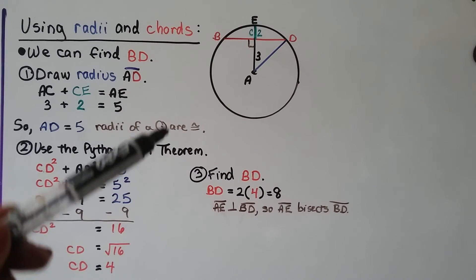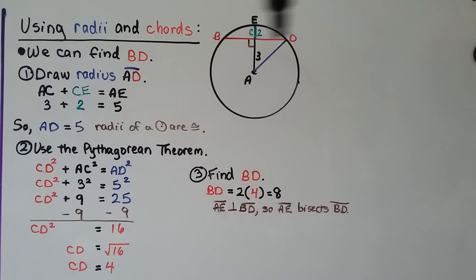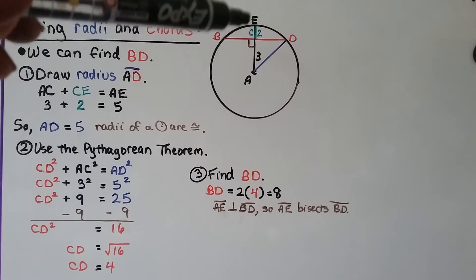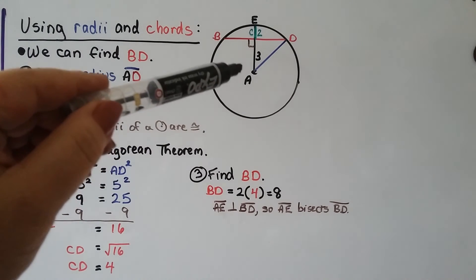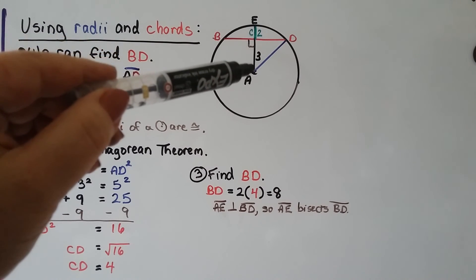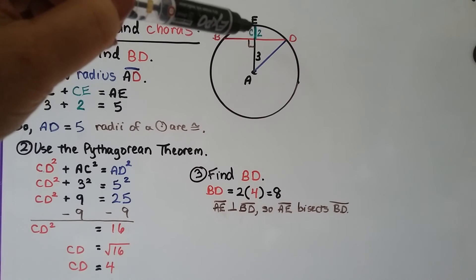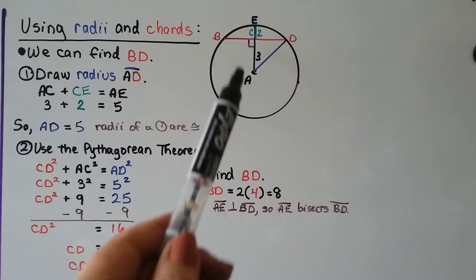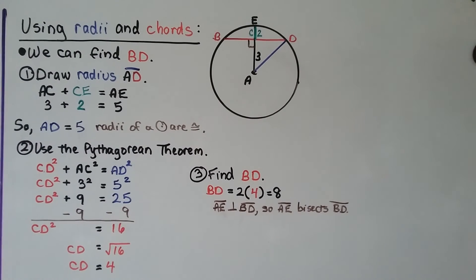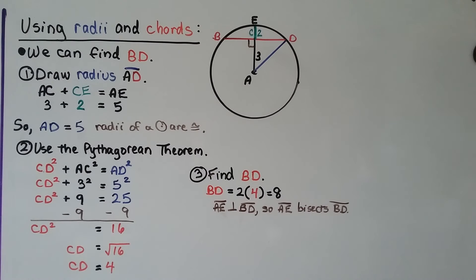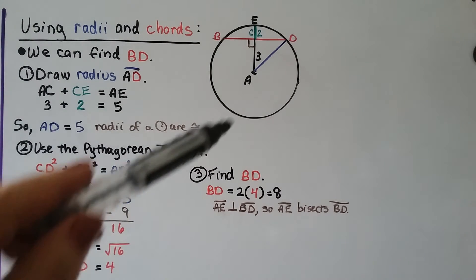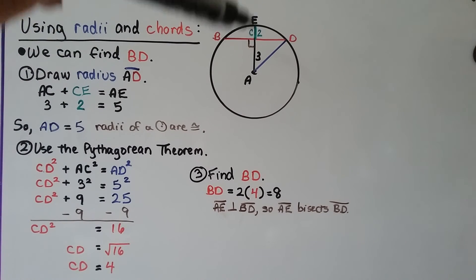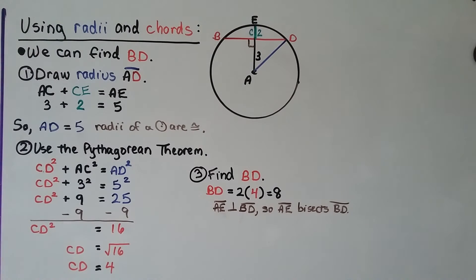Using radii and chords, take a look at this diagram. We have circle A. We can see we have a chord BD. AE here is a radius, isn't it? So is AD. And we can see from this point right here to A is a length of 3, and we can see that this little green area, this little segment right here is a 2, right? So we can find BD. First thing we do is draw radius AD right here. AC plus CE equals AE. AC plus CE equals AE. This 3 plus this 2 equals a 5. So if this radius is a 5, then the one we drew, this blue one, is a 5, because the radii of circle are all congruent, right?